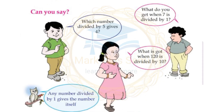Can you say which number divided by 5 gives 4? 20 divided by 5 is equal to 4, because 5 multiplied by 4 equals 20.